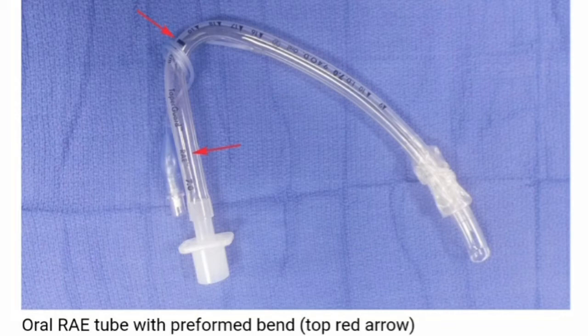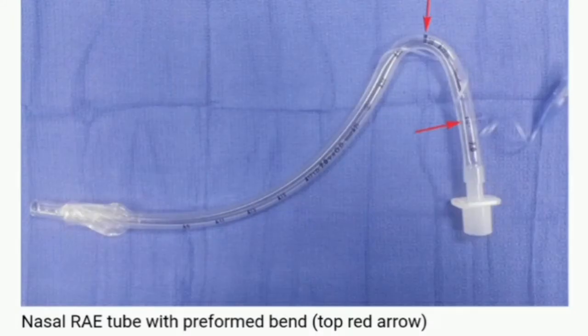A black marker bar is imprinted on the tube at the point of maximum angle of the bend. RAE endotracheal tubes are otherwise designed the same way as standard endotracheal tubes — that is, they have the same left-facing bevel tip, Murphy eye, cuff design, and length diameter markings.